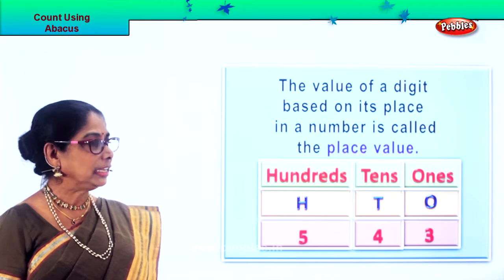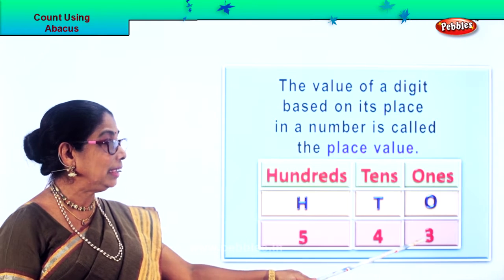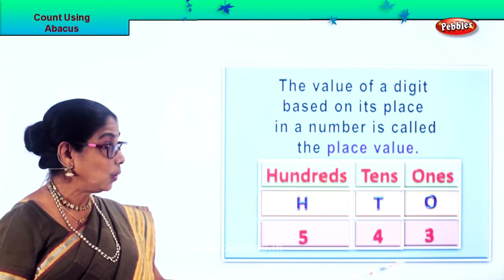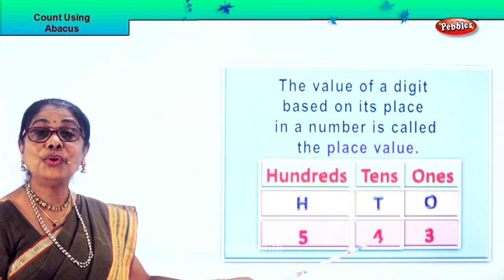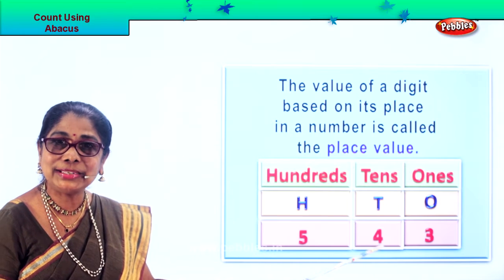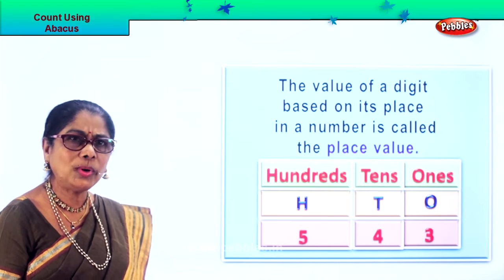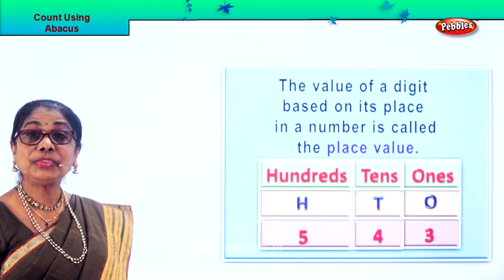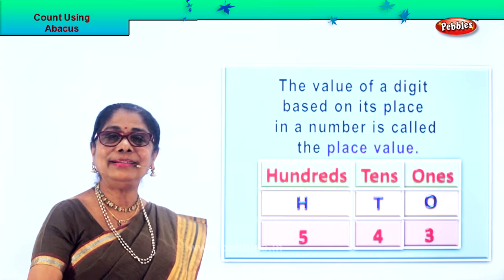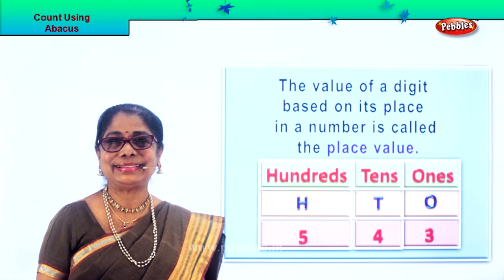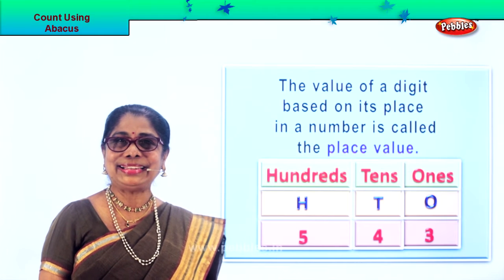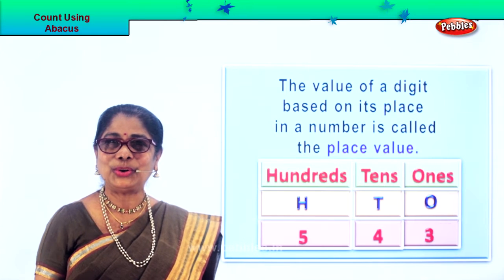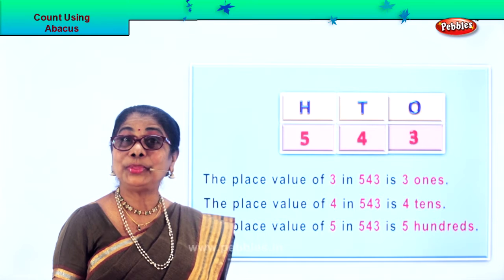Now you tell me: what is the place value of three? Three ones. What is the place value of four? Four tens. What is the place value of five? Five hundreds. Did you understand? Let's get on with sums now.